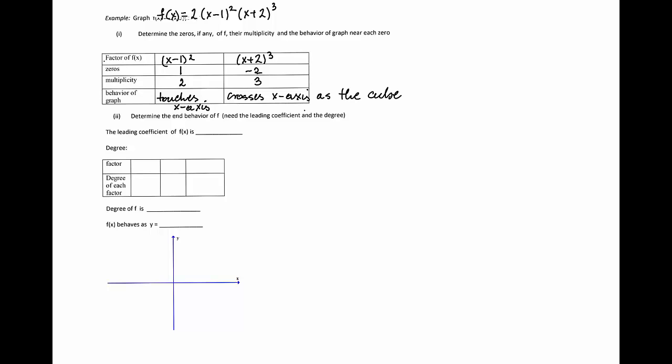We know now how the function behaves near its zeros. Let's look at the end behavior of that function. Because our polynomial is already written in factored form with each leading coefficient of each factor equal to 1, the leading coefficient is the coefficient in front of all those x factors, and therefore that leading coefficient is 2.